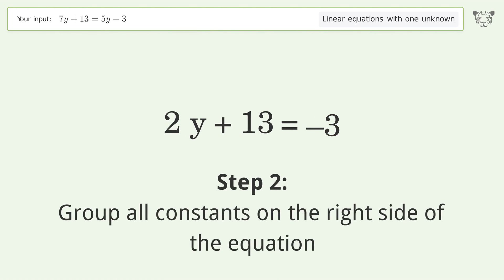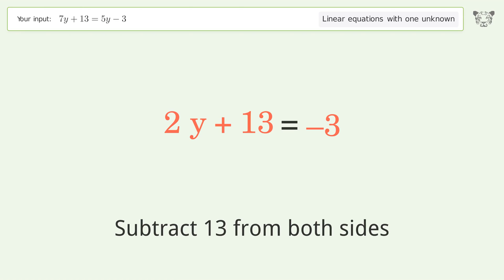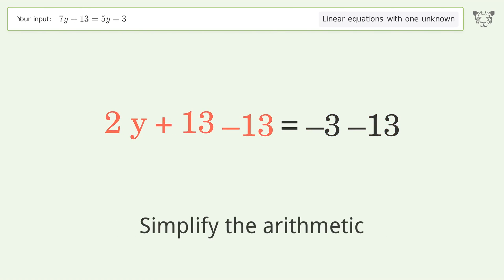Group all constants on the right side of the equation. Subtract 13 from both sides. Simplify the arithmetic.